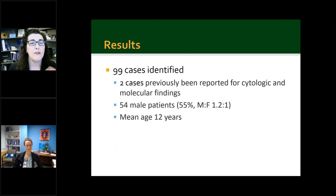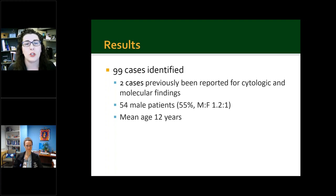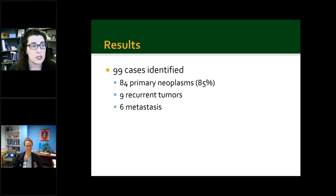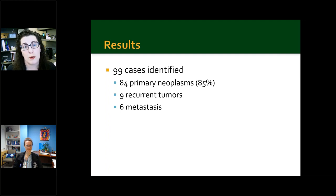Of all cases reviewed, 99 were identified. All patients had tissue confirmation of a malignant bone or soft tissue tumor prior to, concurrently with, or after cytologic preparation. Two cases had previously been reported for cytologic and molecular findings. There were 54 male patients with a male-to-female ratio of 1.2 to 1. The mean age was 12 years, with an age range of 10 days to 18 years — a nice wide range to see a variety of lesions. Of the 99 cases, 84 were primary neoplasms (85%), nine were recurrent tumors, and two were metastases — an epithelioid angiosarcoma and a myxoid liposarcoma, which were the previously reported cases.